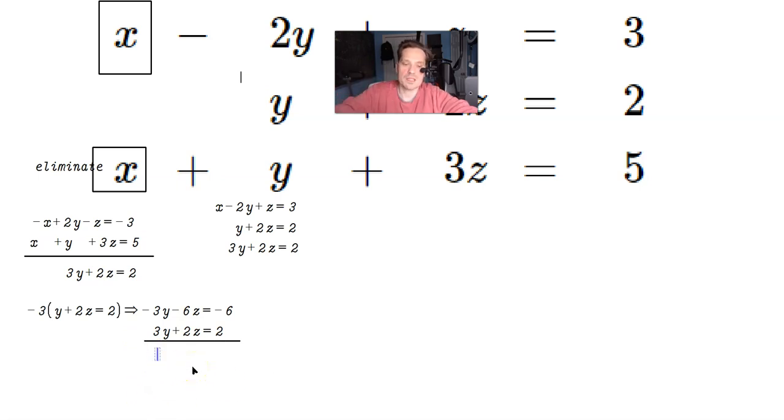Negative 3y plus 3y is 0. Goes away. Negative 6z plus 2z is negative 4z. And then negative 6 plus 2 is negative 4.